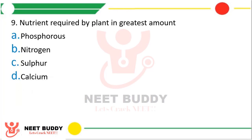Question 9: Nutrient required by plant in greatest amount is? Option A, phosphorus. Option B, nitrogen. Option C, sulphur. Option D, calcium. The correct answer is Option B — nitrogen.